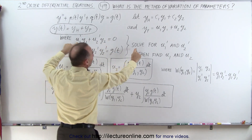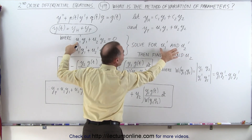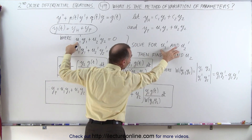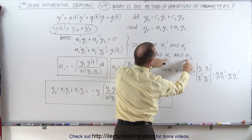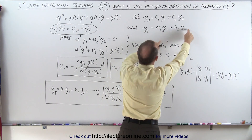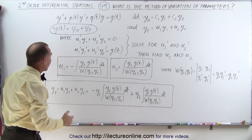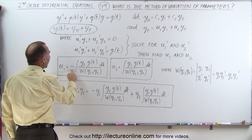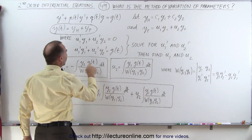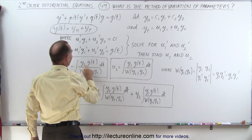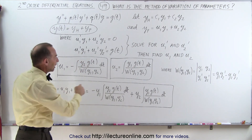We take these two equations and solve them for u1' and u2'. Then, using those results, we integrate to find u1 and u2. It turns out that u1 equals the negative of the integral of y2 times g(t) divided by the Wronskian of y1 and y2, with respect to t.